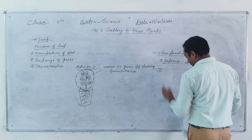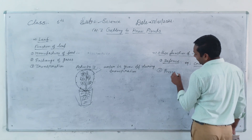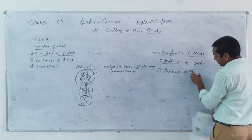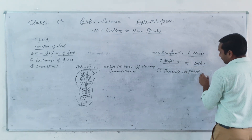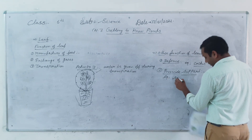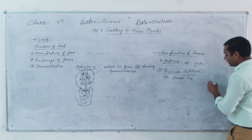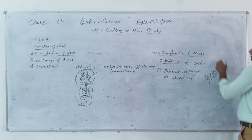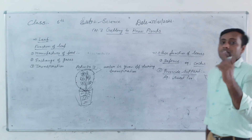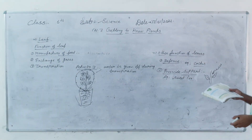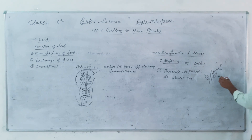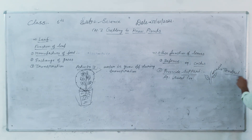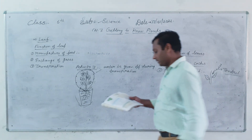Next is support. Some plant leaves are modified into tendrils. These tendrils support the plant by helping it climb. This is a leaf modification for support.